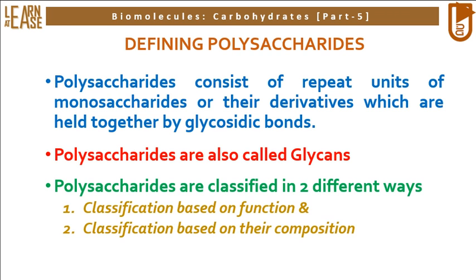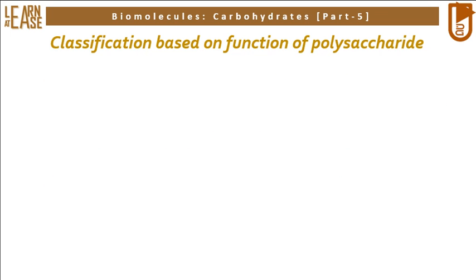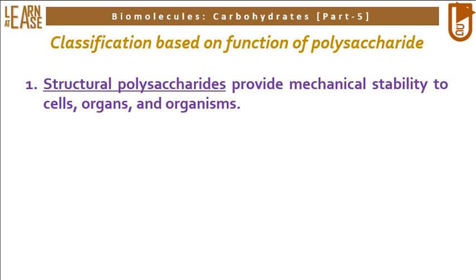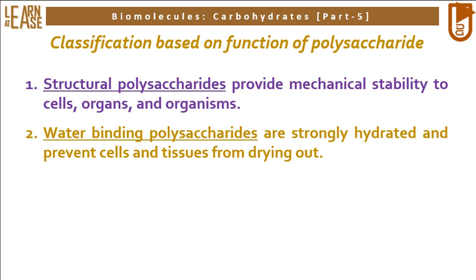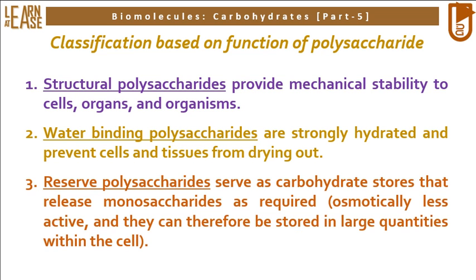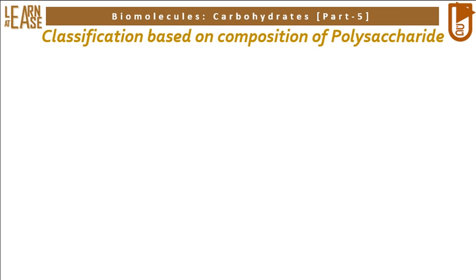Polysaccharides are classified in two different ways: classification based on function and classification based on their composition. Classification based on function includes three types. First, structural polysaccharides, which provide mechanical stability to cells, organs, and organisms. Second, water-binding polysaccharides, which are strongly hydrated and prevent cells and tissues from drying out. Third, reserve polysaccharides, which serve as carbohydrate stores that release monosaccharides as required, are osmotically less active and can therefore be stored in large quantities within the cell.